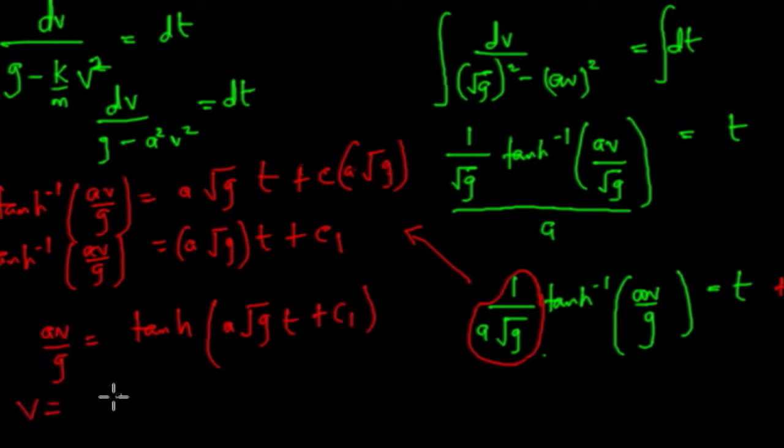So that implies hyperbolic tangent of a root g t plus c1. And then v equals g over a hyperbolic tangent of a root g t plus c1.